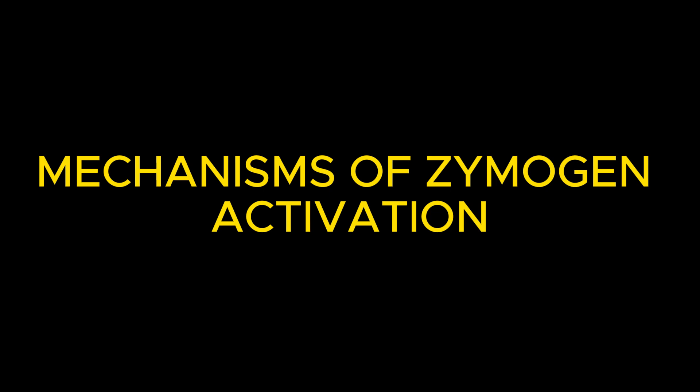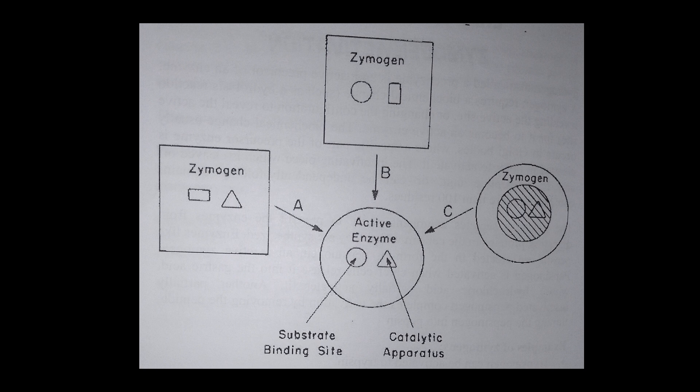Now let's look at the mechanisms of zymogen activation. From the image shown on your screen, you can see three main mechanisms of zymogen activation, represented as A, B, and C. At the center is the active enzyme, and you can see three zymogens. We are looking at how we can convert these zymogens into the active enzyme. The first mechanism, represented as A, is that zymogens can be converted to the active form by inducing a conformational change in the structure of the substrate binding site.